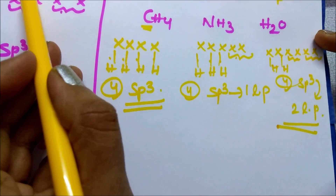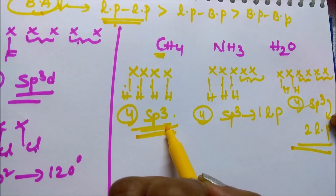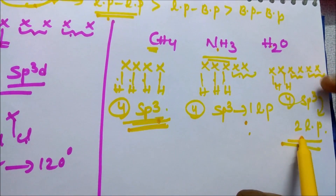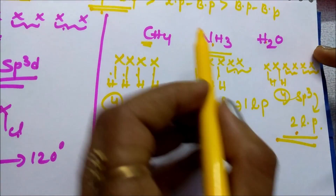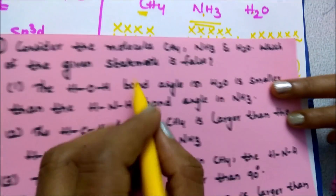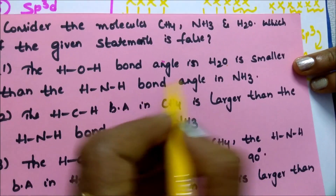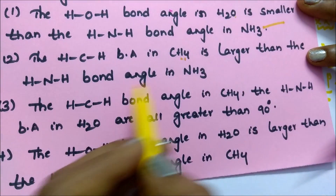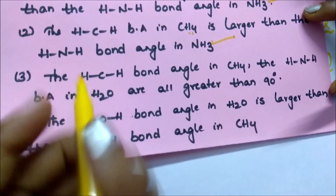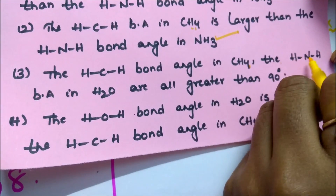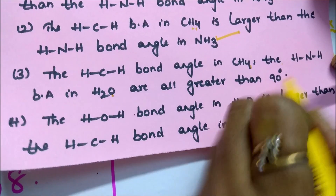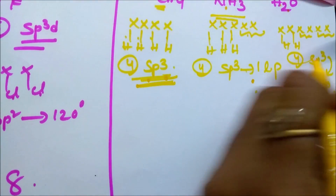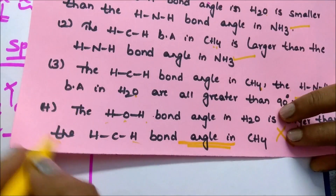With more lone pairs, there is more decrease in bond angle. CH4 is tetrahedral with 0 lone pairs. NH3 has 1 lone pair so its bond angle decreases. H2O has 2 lone pairs, so its bond angle decreases even more. The HOH bond angle in H2O is smaller than the HNH bond angle in NH3. The HCH bond angle in CH4 is larger than in ammonia. The statement that the HOH bond angle in water is larger than in CH4 is incorrect.